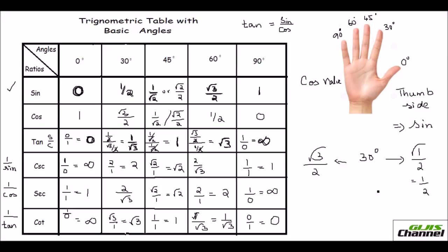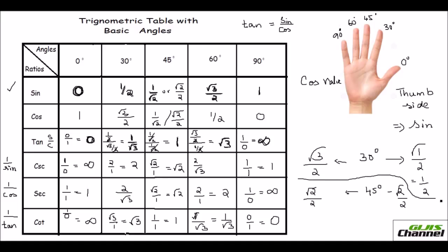For 45°, fold down the middle finger. On either side you have 2 fingers. Find the square root of 2 and divide by 2, giving √2/2 for both sides. So sine 45° = √2/2 and cosine 45° = √2/2 — you can check that in the table.